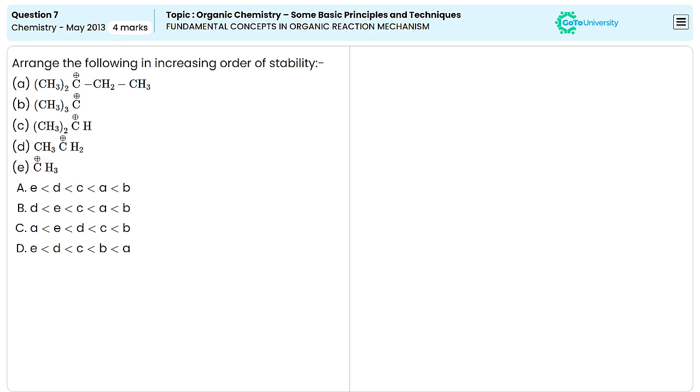Different carbocations are given in this question. We need to arrange these carbonium ions in increasing order of their stability.